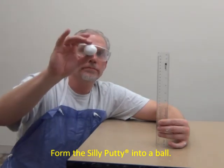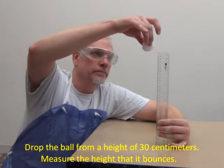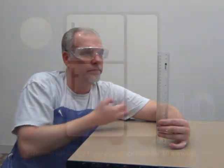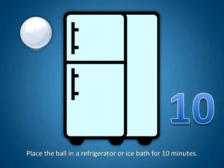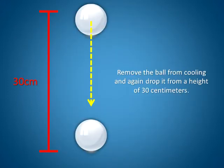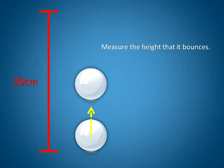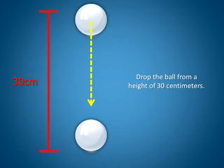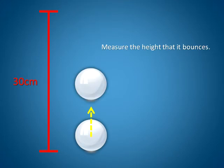Form the silly putty into a ball. Drop it from a height of 30 centimeters and measure the height that it bounces. Place the ball in a refrigerator or ice bath for 10 minutes. Remove the ball from cooling and again drop it from a height of 30 centimeters; measure the height that it bounces. Place the ball about six inches from a light bulb for five minutes. Drop the ball from a height of 30 centimeters and measure the height that it bounces.